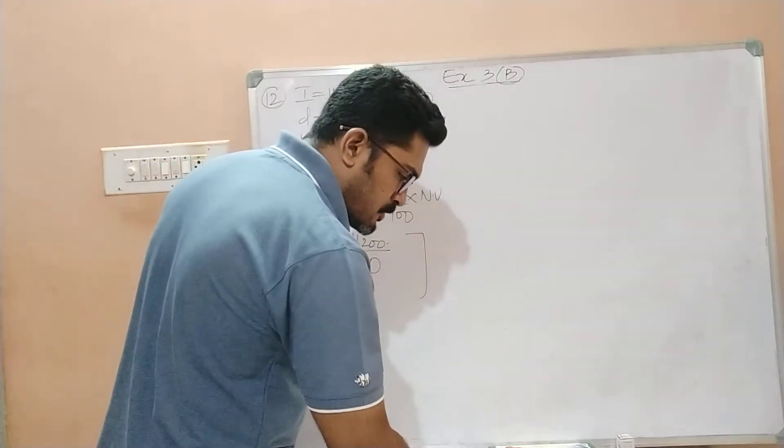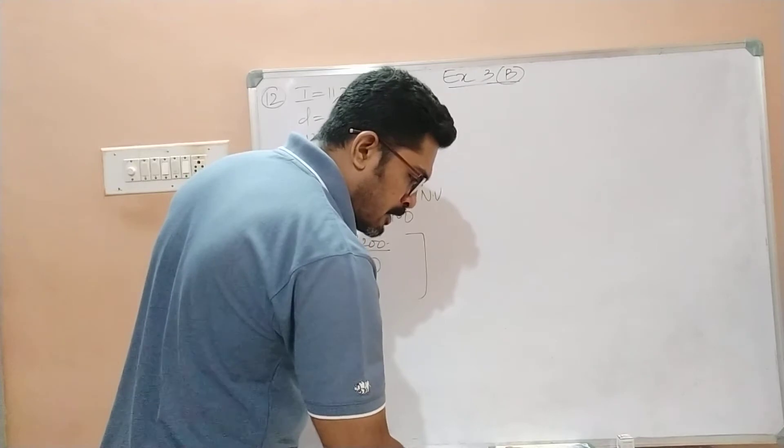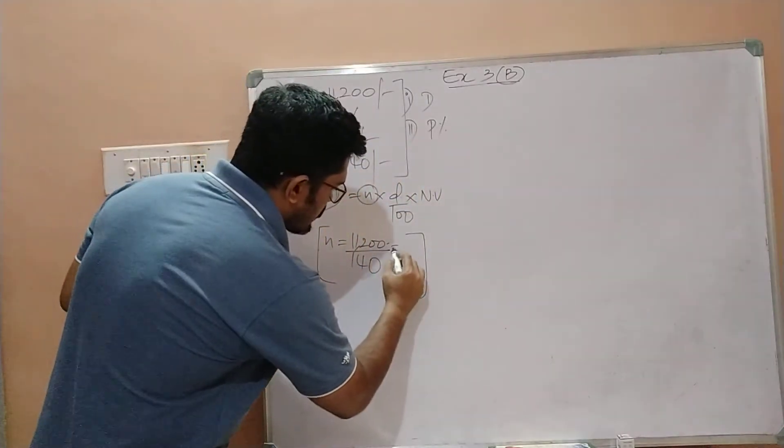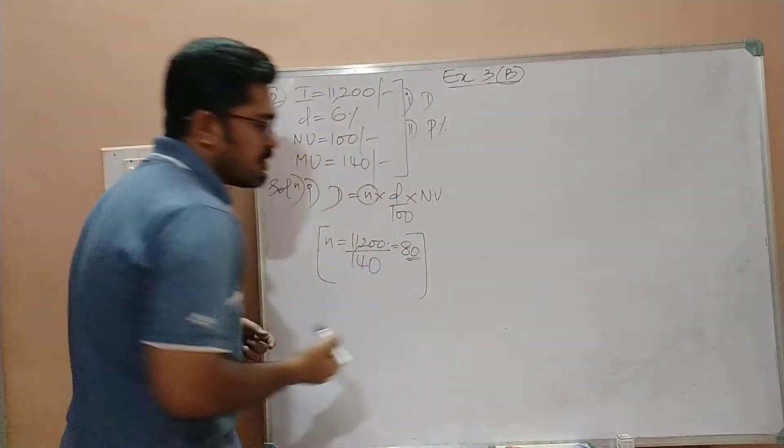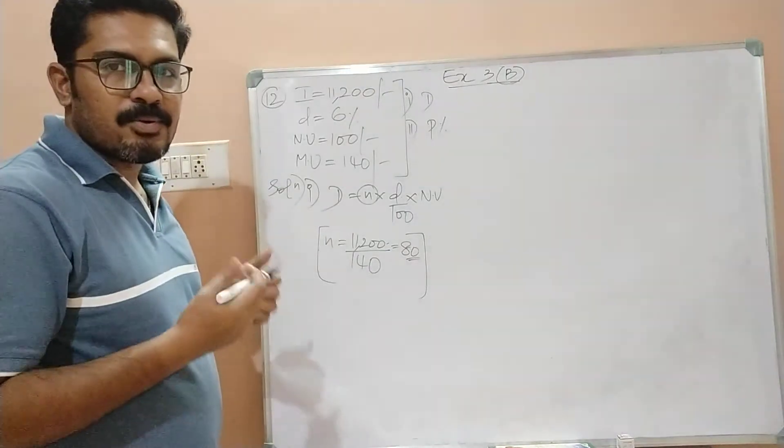So let us find 11,200 divided by 140, which is equal to 80 shares. You got the value of N?